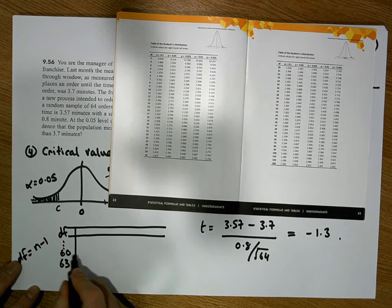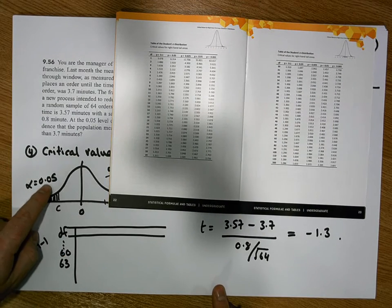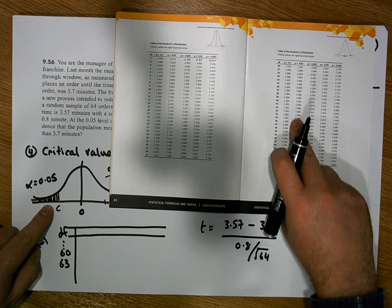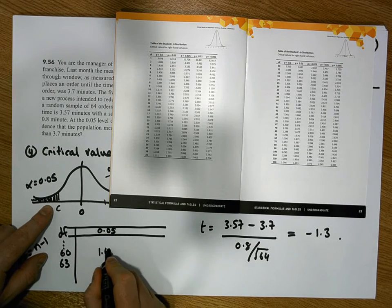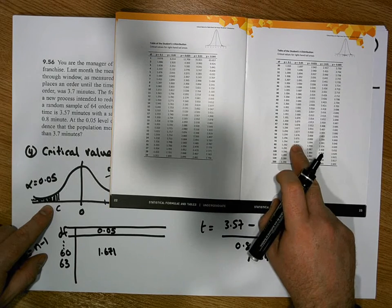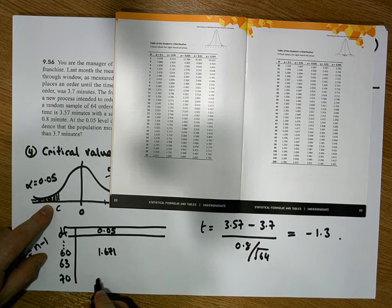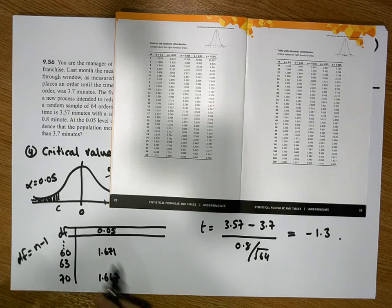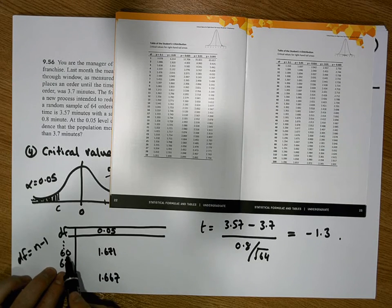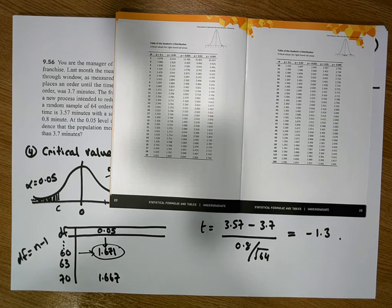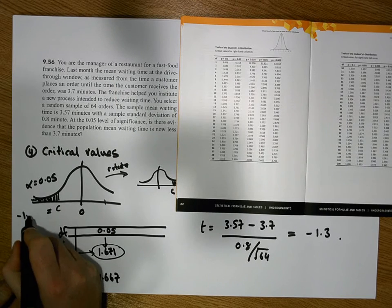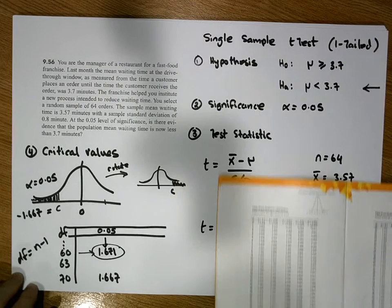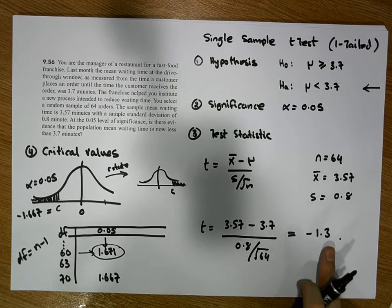At 60 degrees of freedom with 0.05 in the tail, the critical value is 1.671. At 70 degrees of freedom it is 1.667. Since 63 is closer to 60, we use 1.671 as our critical value. By symmetry, our left-tail critical value c is minus 1.671.